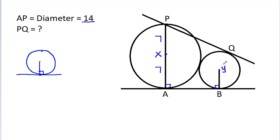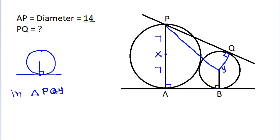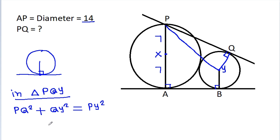And if we join YQ, then this angle will be 90 degrees. Now if we join PY, then in triangle PQY: PQ² + QY² = PY², so PQ² = PY² - QY².